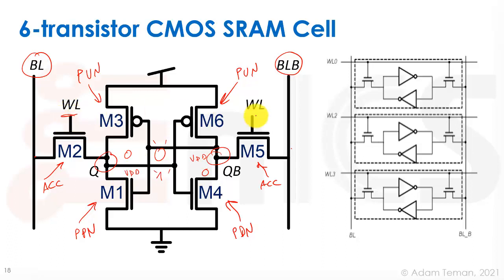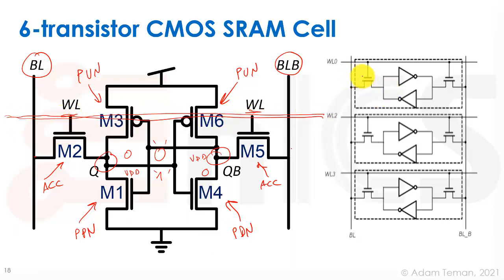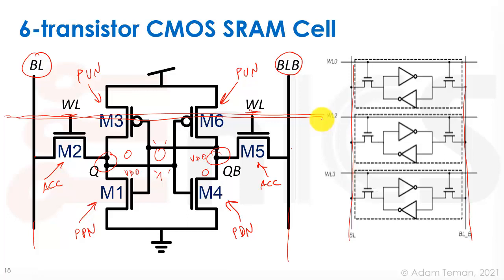The word line controls both access transistors and is shared across all cells in a row. Multiple bit cells are stacked in a column, sharing the same bit lines vertically. By selecting one word line and pre-charging the bit lines, the intersection of one word line and one bit line accesses a single cell — which is what gives us random access, our RAM.